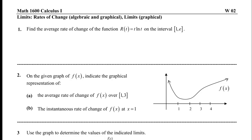Let's take a look at this worksheet to go over some of the things we've learned recently, both on rates of change and limits. The first problem: find the average rate of change of the function r(t) = t·ln(t) on the interval [1, e]. All we're doing is asking for a rate of change over an interval. Our interval starts at 1 and goes to e, which is a perfectly fine real number.